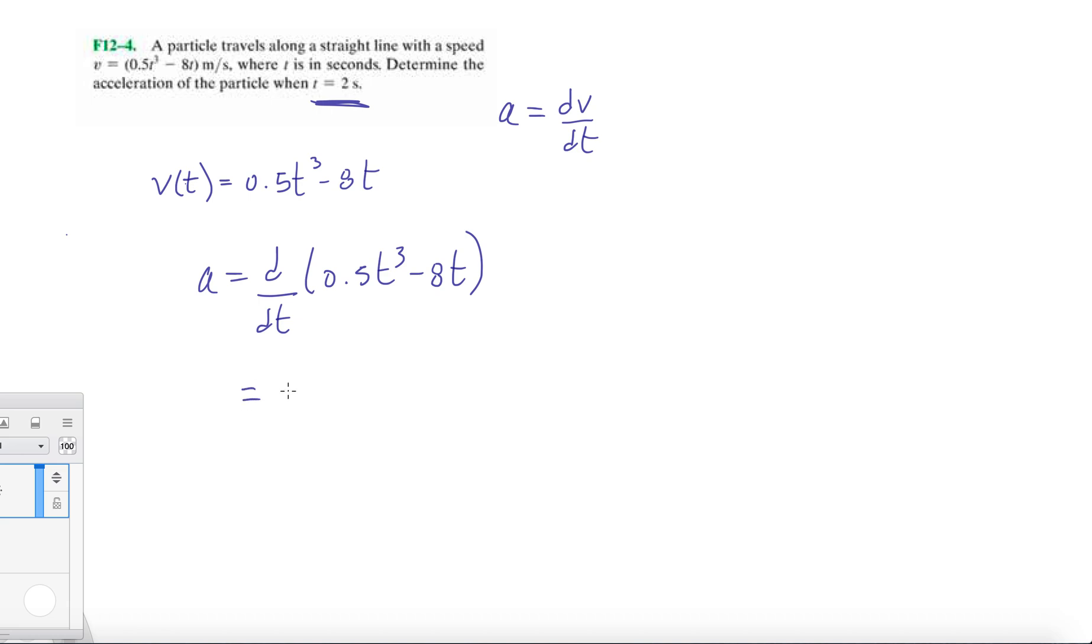We take one derivative, so we have three, so I'm going to do it in steps so everyone knows where everything's coming from. 0.5 times t squared minus 8. That's the derivative of the velocity function, and then we get acceleration is 1.5t squared minus 8.